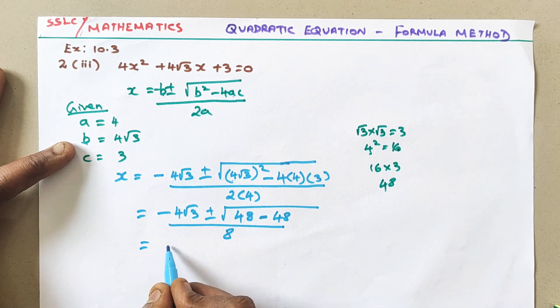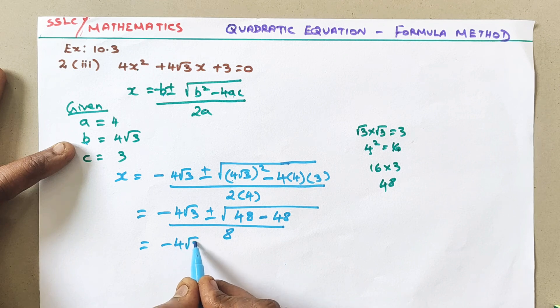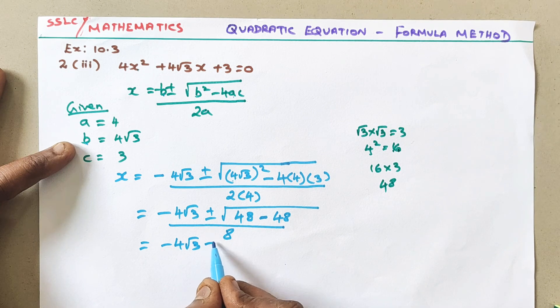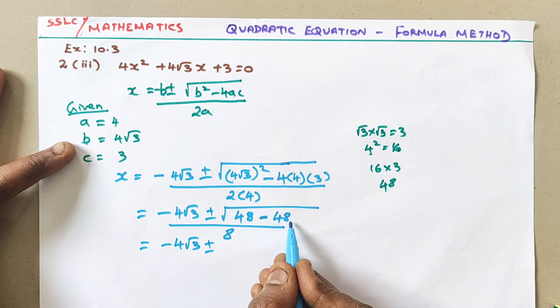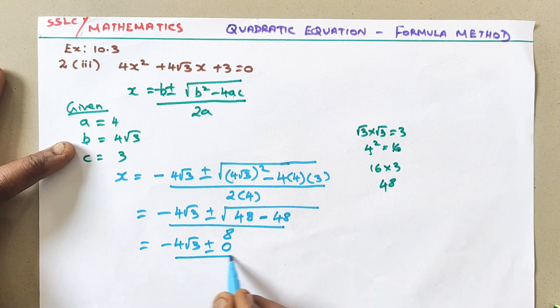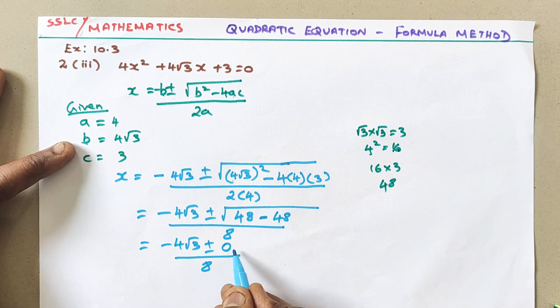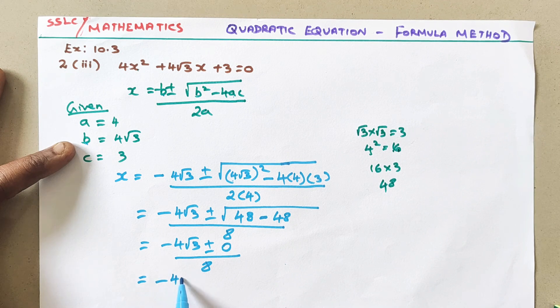Now let me simplify this. Now see here, again plus or minus √48. √48 - 48, √0. √0 is 0. Divided by 8. So we can eliminate this term. So what will be the answer? -4√3 / 8. So if you cancel, two fours are 8. So what is the final answer? -√3 / 2.